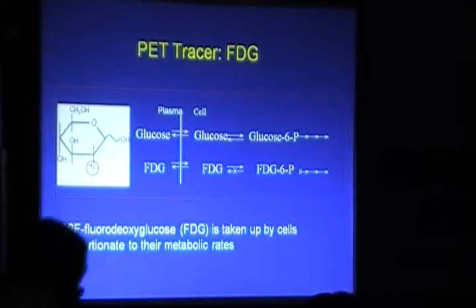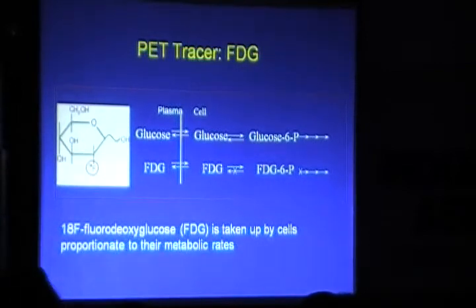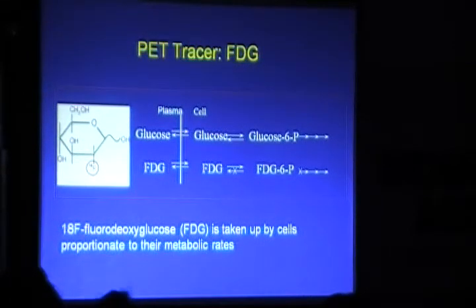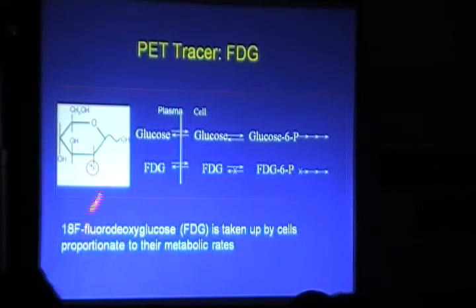For example, prostate cancers are not FDG-avid. There are different other molecules coming, like F18-choline, which can be used instead of FDG for these cancers. These molecules are metabolically trapped and retained within the cancer cells.